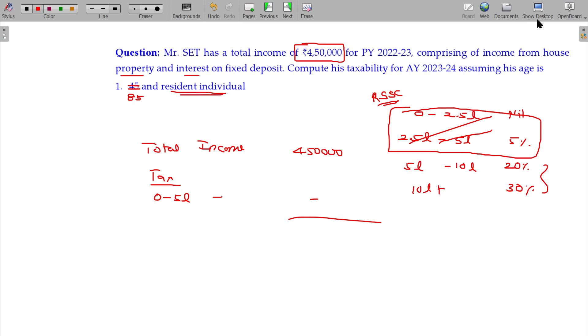Rebate under section 87A is applicable as he is a resident individual and his total income is less than or equal to 5 lakhs. In this case, tax equals 12,500 or zero, whichever is lower is deductible. So no tax will be paid.